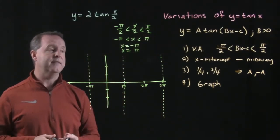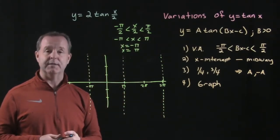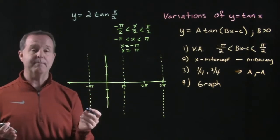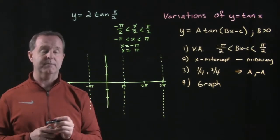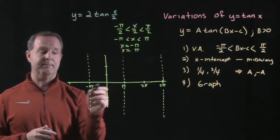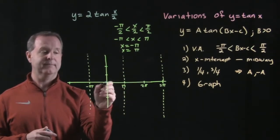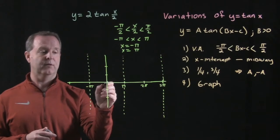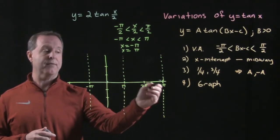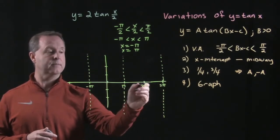Next, we want to determine the x-intercept. The x-intercept is just the midway point between the asymptotes. Halfway between negative pi and pi is zero, and halfway between pi and 3 pi is 2 pi.